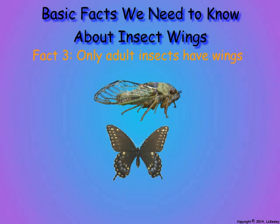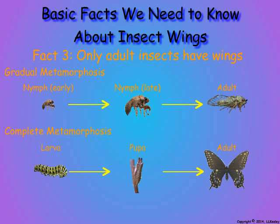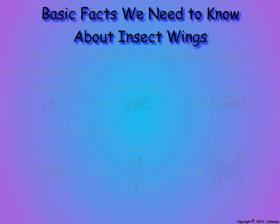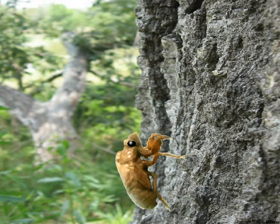Here are the two types of insect development that produce winged adults. Insect species with gradual metamorphosis have immature feeding stages called nymphs that resemble the adult; nymphs have wing buds that expand into the wings after the adult molt. Complete metamorphosis consists of worm-like larval feeding stages followed by a quiescent pupa that develops into the final winged adult. Little flies do not grow larger to become big flies—if it has wings, it is a fully grown adult insect. Now let us describe the structure of the wing using the cicada as a model.